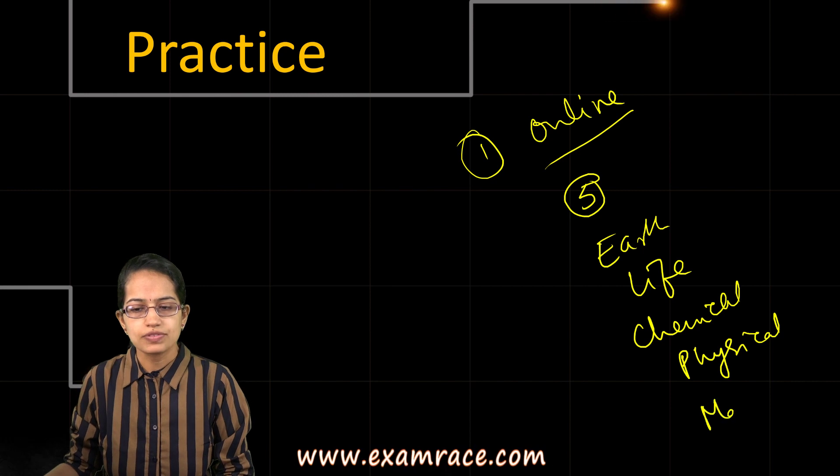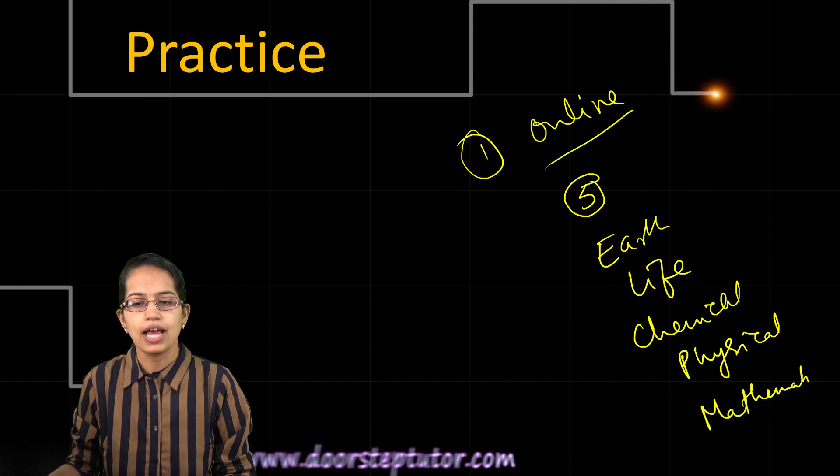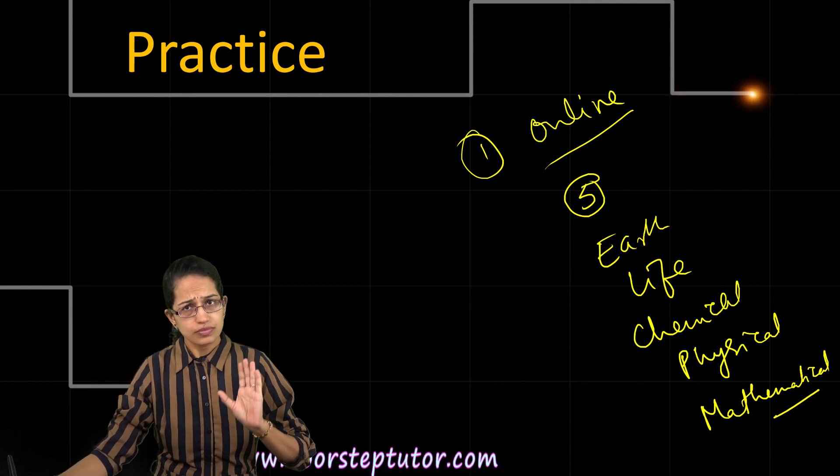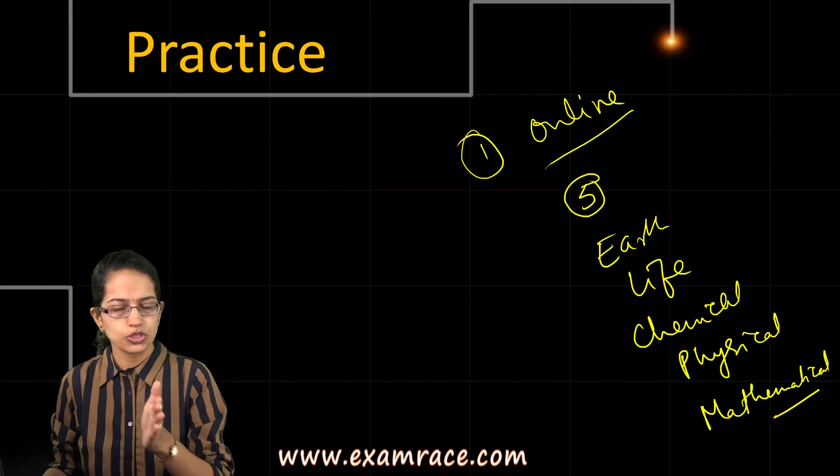All five subjects have one paper in common, which is the General Aptitude Paper with 20 questions, which we'll understand later.